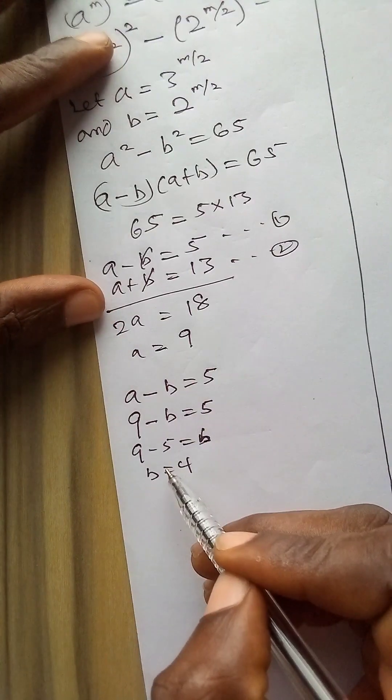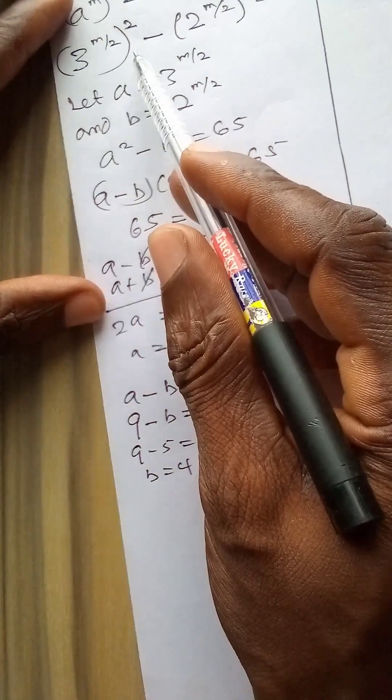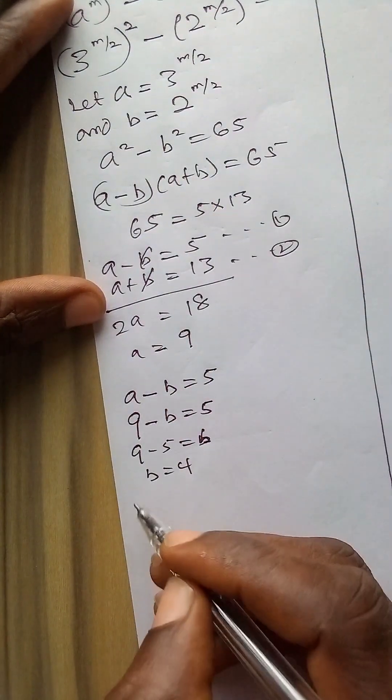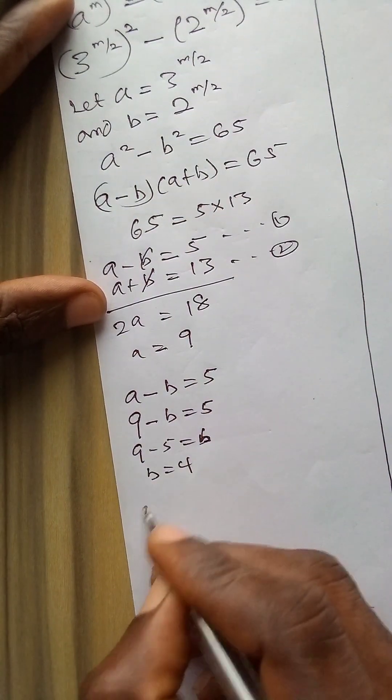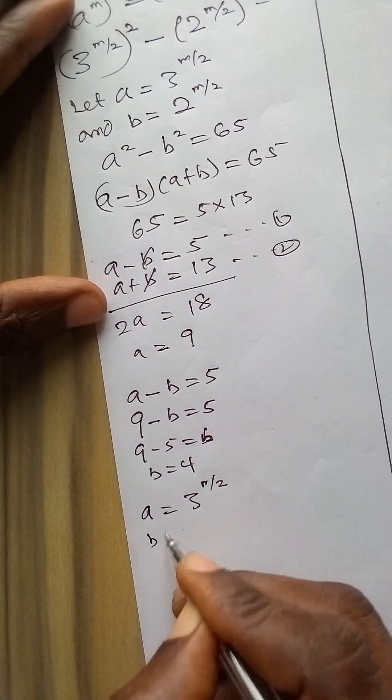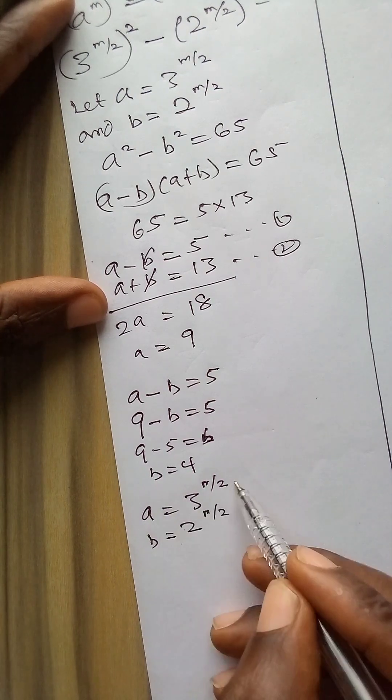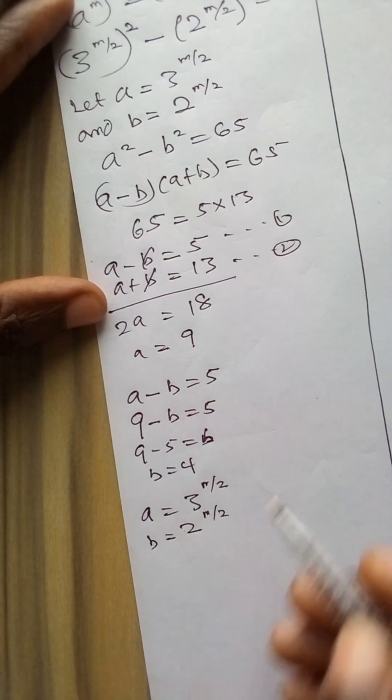I have the value of a and I have the value of b. I will now substitute either of them into the original equation. Let's remember that we made a substitution that a is equal to 3 to power m over 2, or b is equal to 2 to power m over 2. If we use either one we will get the same value.